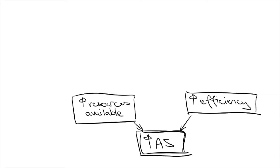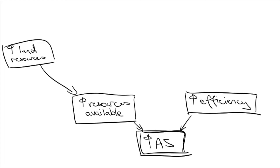How can we increase resources available? Land resources refer to natural resources. More advanced extraction methods and technologies could increase the availability of these resources. Furthermore, a shift from non-renewable to renewable energy could mean that we are shifting from finite land resources to something more available.